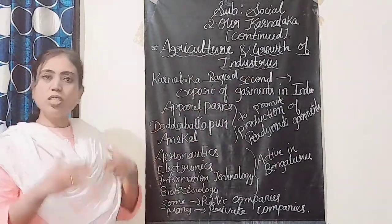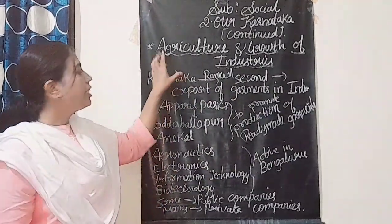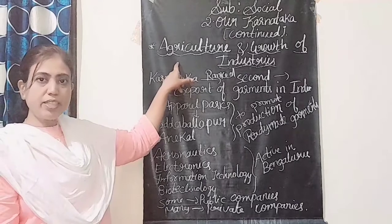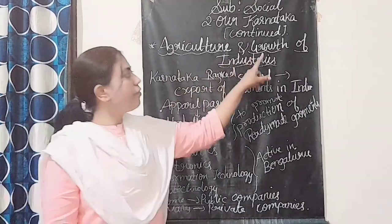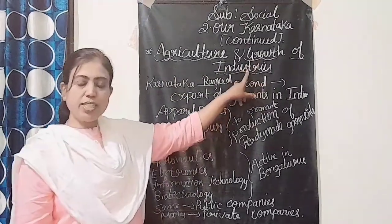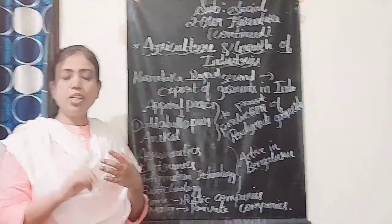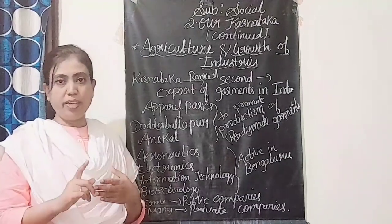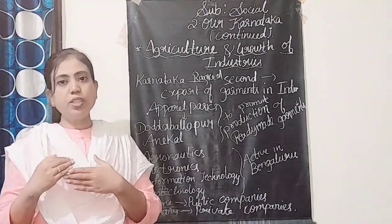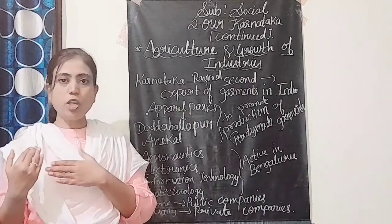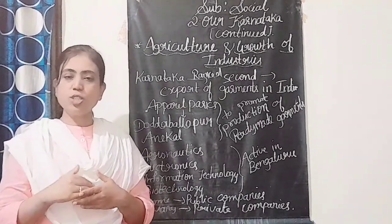The key outcome of this topic is that agriculture is the primary sector and growth of industry is the secondary sector in the economy. Both sectors help improve growth and progress.